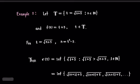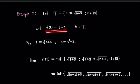The next example uses a timescale containing numbers of the form √(n + 3) for some natural number n, with f(t) = t + 3. For a number t = √(n + 3) in this timescale, we have n = t² - 3.